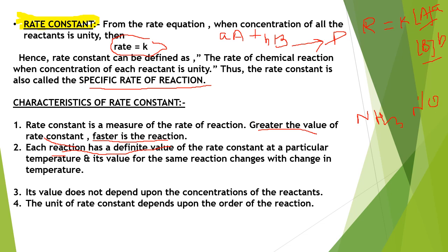It is not compulsory that all reactions have the same rate constant. For ammonia it has a different value, for nitrogen monoxide it will have a different value. On a particular temperature it will be constant, but as we change the temperature, the value of rate constant also changes because the rate of reaction depends upon temperature.